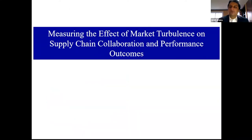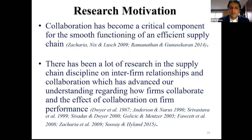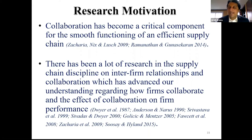Now let's switch to my research paper: 'Measuring the Effect of Market Turbulence on Supply Chain Collaboration and Performance Outcomes.' Collaboration between firms in a supply chain has been extensively researched — why firms collaborate, how they collaborate, and what the benefits are. We now understand that the better organizations in a supply chain are able to collaborate, the more chances of success, and collaboration has become a critical component for smooth, efficient supply chain functioning.